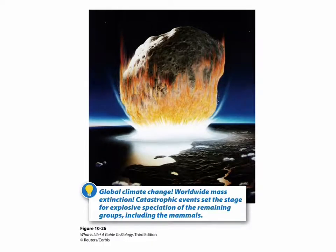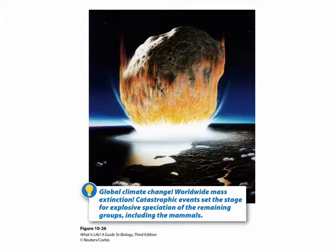Mass extinctions generally occur due to rapid climate change. There are many events that can cause this. For example, when the dinosaurs went extinct, a large meteor hit Earth and landed in the Gulf of Mexico. This caused such a disruption, throwing so much sediment into Earth's atmosphere, that global climate change occurred, causing the extinction of dinosaurs and many other species.